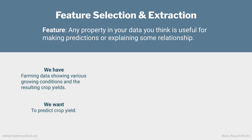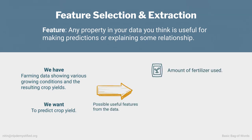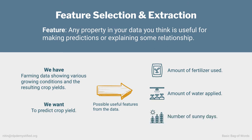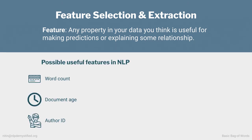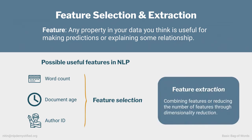Let's say we have a collection of farming data showing the various conditions crops were grown in and the resulting yield. What we're interested in is taking this data and building a model which can take in a set of growing conditions and predict future crop yields. In this case, a few features we might take from the data are the amount of fertilizer used, the amount of water applied, and the amount of sunlight available. In NLP, features could be a document's word count, a document's age, the author ID, or some metadata.